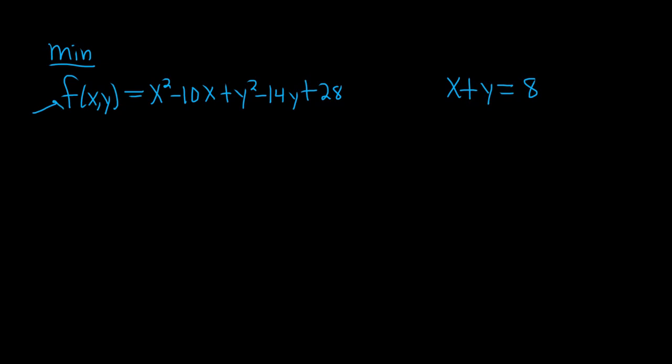We're going to minimize this function according to this constraint x + y = 8. To do that, we're going to use something called Lagrange multipliers. In the method of Lagrange multipliers, you solve some equations. The first equation is that the gradient of f is equal to lambda times the gradient of g. The second equation is that g(x,y) is equal to a constant.